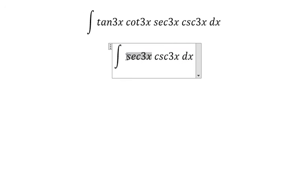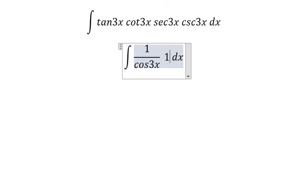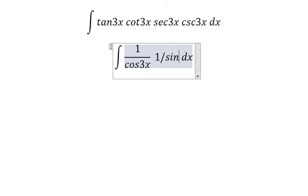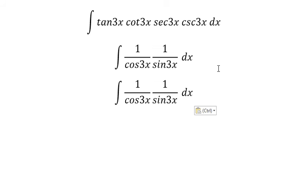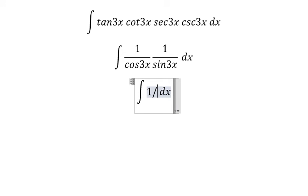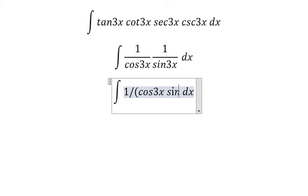Secant of 3x we can change into 1 over cos 3x. This one we can change into 1 over cos 3x, so we can write into 1 over cos 3x and sine 3x.